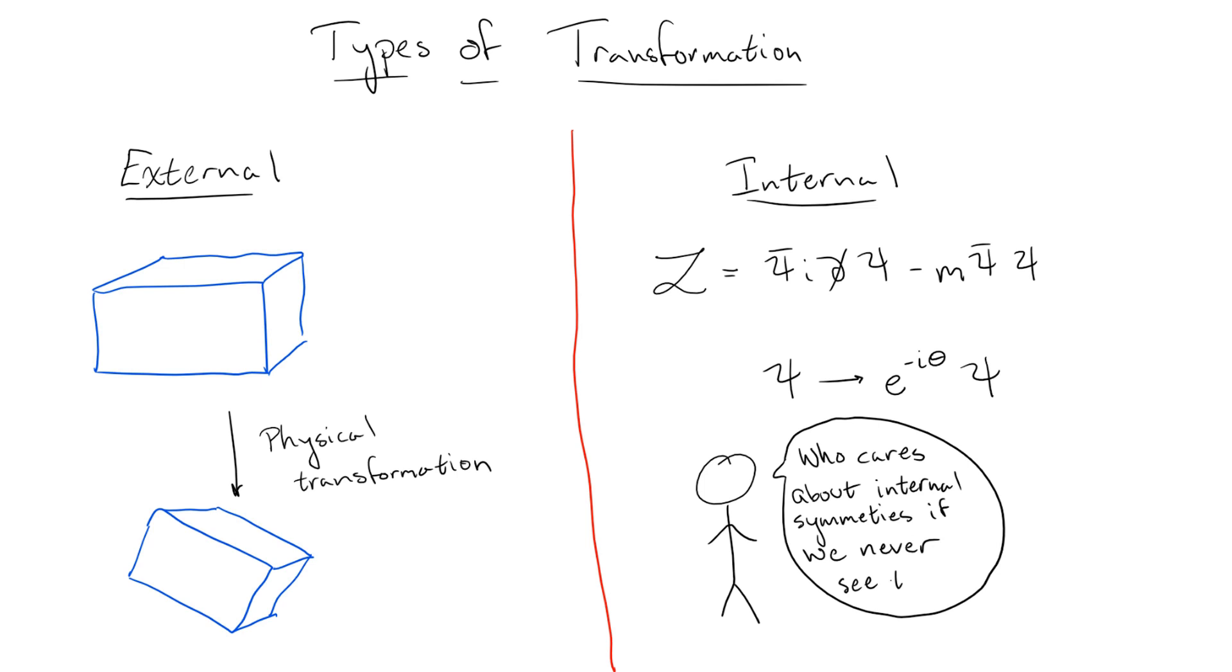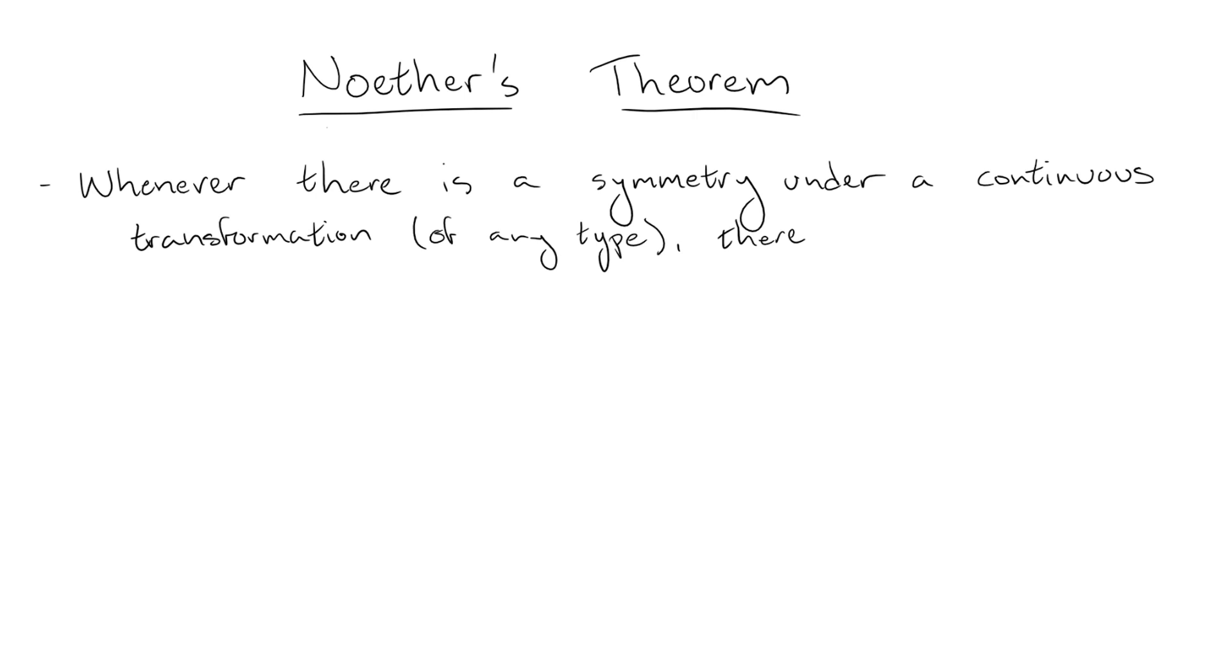Well, this brings us to an absolutely amazing result which comes courtesy of early 20th century mathematician Emmy Noether. What Noether's theorem says is that whenever our equations are symmetric under transformations with a continuous transformation parameter, global, local, internal, or external, this directly corresponds to a physical conservation law.